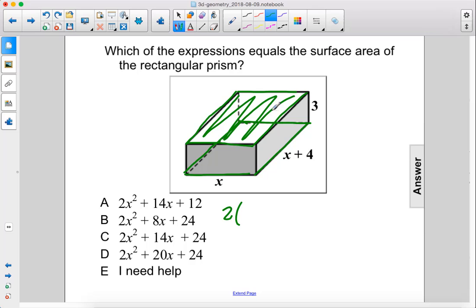So what is the area of the top rectangle? That would have the length of x times x plus 4. So that's 2 times x squared plus 4x, which is 2x squared plus 8x. That's for the top and the bottom.